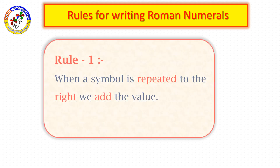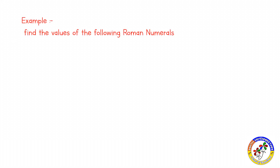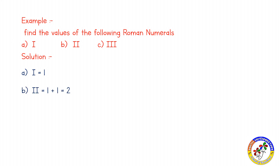Rules for writing Roman numerals. The first rule is: when a symbol is repeated to the right, we add the value. For example: I equals 1. II — here two I's are written, so 1 plus 1 equals 2. III — three I's are there, so 1 plus 1 plus 1 equals 3.